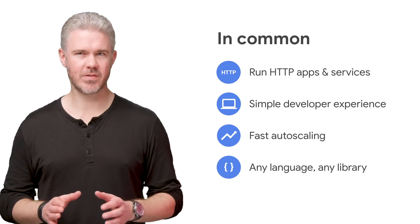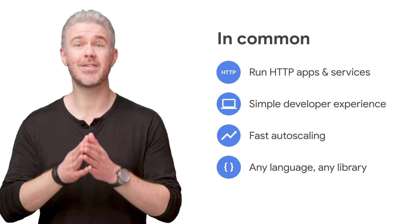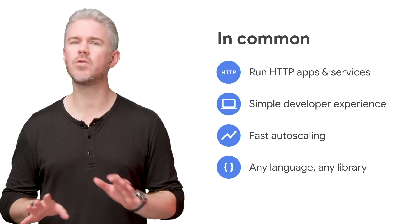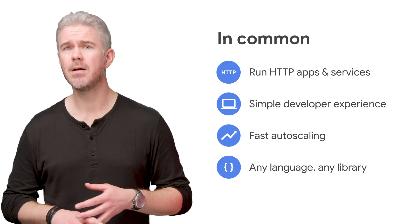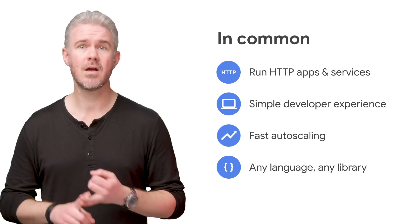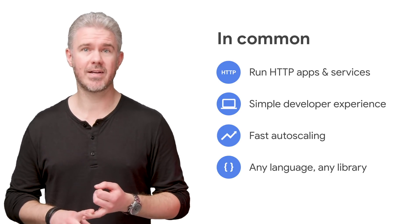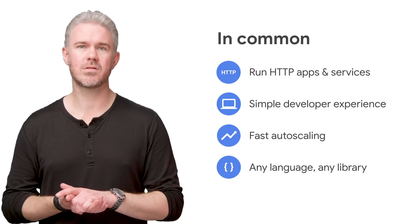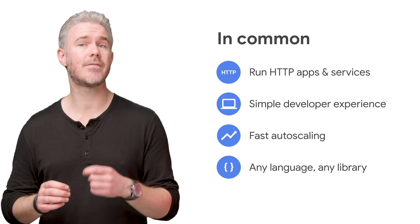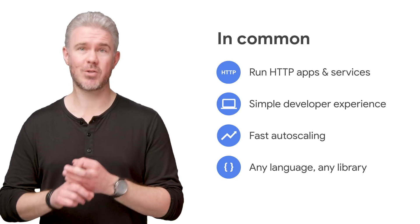Before we discuss their differences, let's take a look at what both Cloud Run and Cloud Run on GKE have in common. Both allow you to create HTTP services that respond to all the normal HTTP methods like GET, POST, PUT, and so on. Both have a simple command line and user interface for developers to quickly deploy and manage services that automatically scale up depending on traffic and scale down to zero when not in use. However, when running on GKE, the auto-scaling is limited by the capacity of your GKE cluster. Both let you use the languages and libraries of your choice.